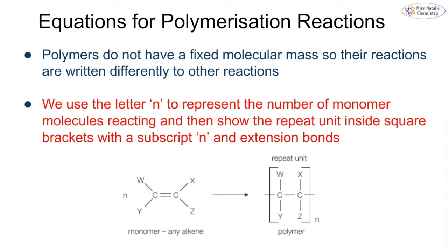Polymers do not have a fixed molecular mass, so when we write out their reactions we write them slightly differently. This is where we introduce the use of the letter n. The n is outside of the brackets and before the monomer to show that we have a specific number - and that number can be any number because not all polymers are going to be the same. This shows us that we're reacting n monomers, with w, x, y, and z groups representing any substituents, reacting in addition polymerization to form the polymer. We show the repeat unit with square brackets and the n outside, making sure to show the extension bonds.